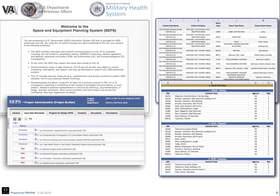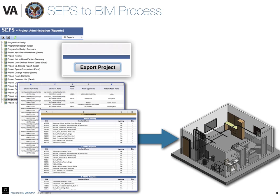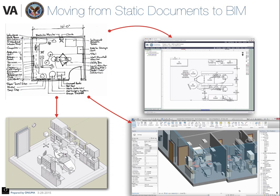Program for design, project room contents documents, and other reports can be output from CEPs for a project. There's a new process now being defined to use CEPs output with BIM. In the CEPs tool, there has been an export that has existed for a while called a project BIM Excel export. Moving from static documents to BIM will enhance the consistency of information as it gets communicated to the design teams from CEPs.